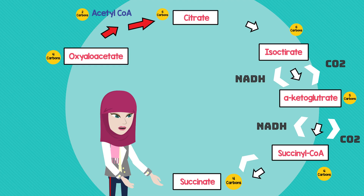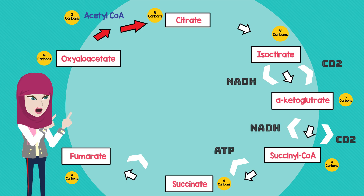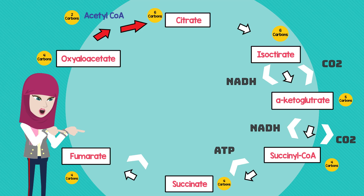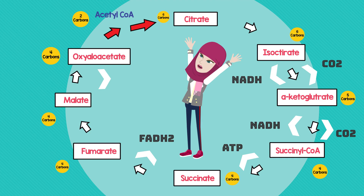Succinyl-CoA is then converted to succinate and an ATP is produced in the process. Succinate is then converted into fumarate, where an FADH2 is produced. Fumarate becomes malate, and malate completes the cycle becoming oxaloacetate, producing the final NADH.